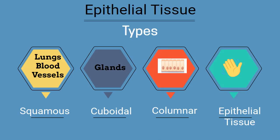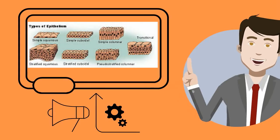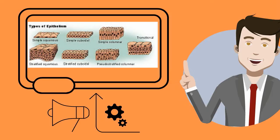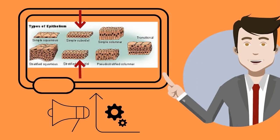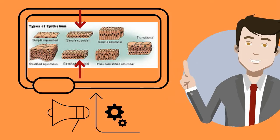Columnar tissues are just like a column — their height is greater than their width. You find these in the digestive tract and possibly the trachea. They also are divided into simple, which are one layer, and stratified, which are multilayered.